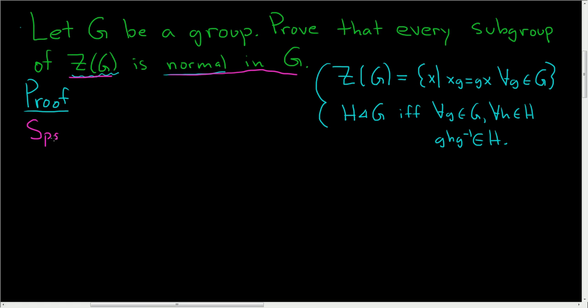So suppose that H is a subgroup of the center of G. So the inequality sign actually means a subgroup. So now we have to show that H is normal in G.